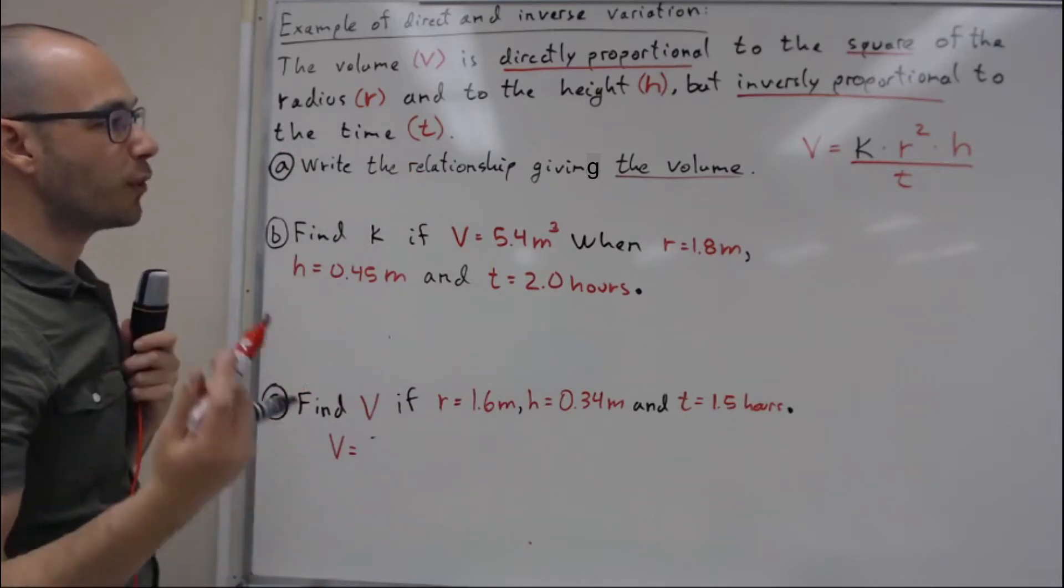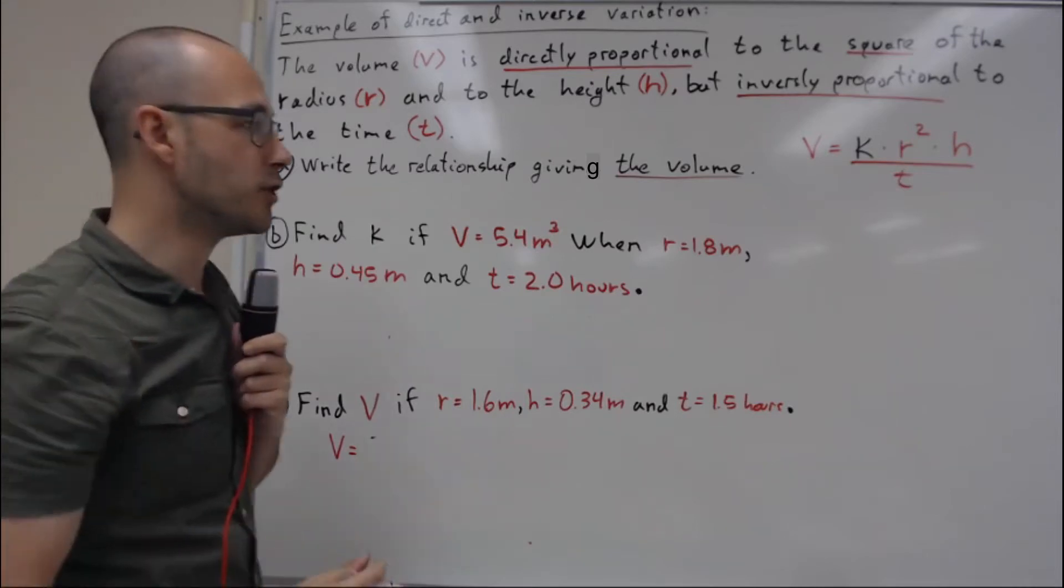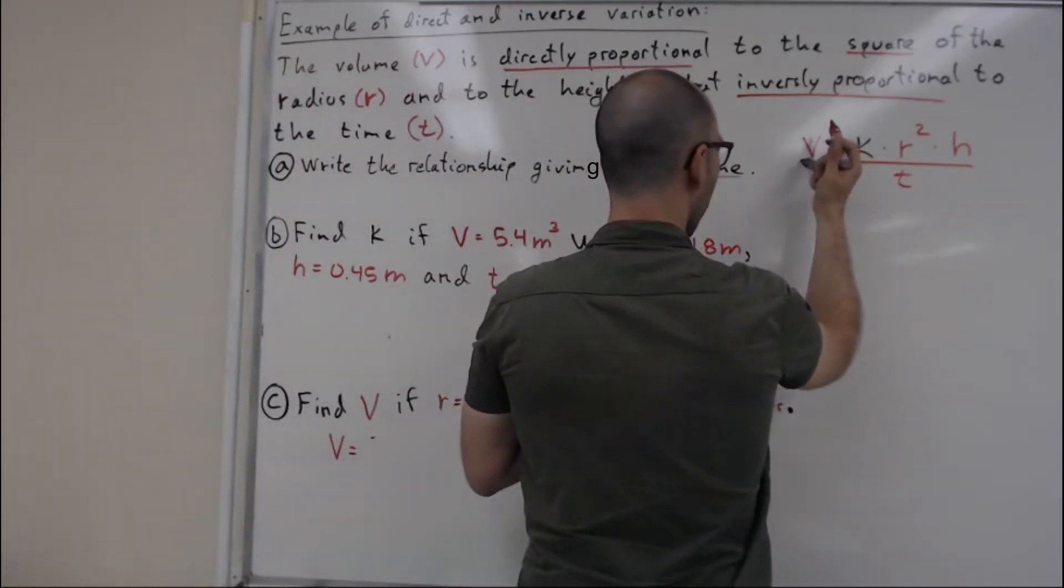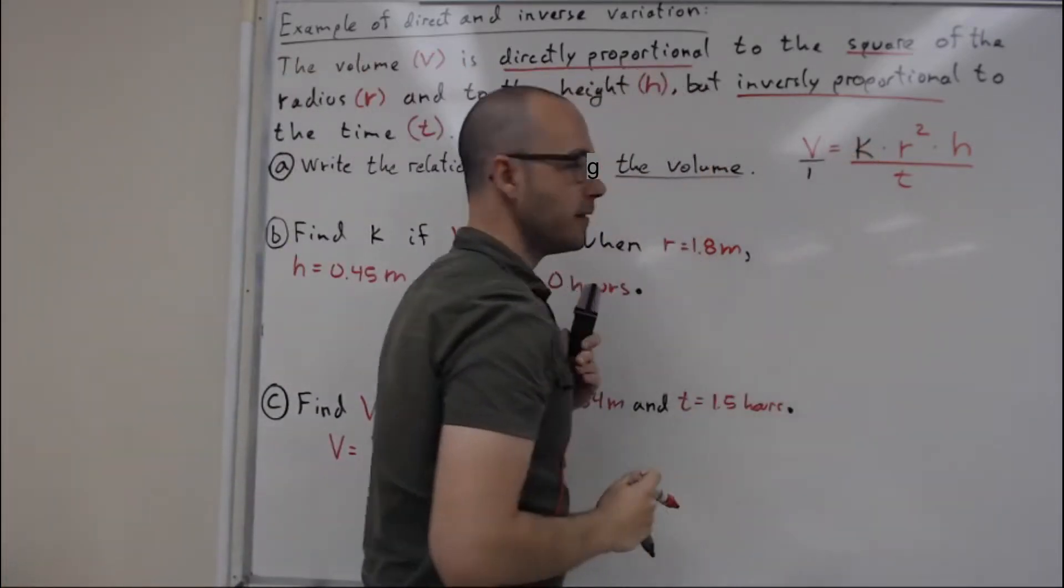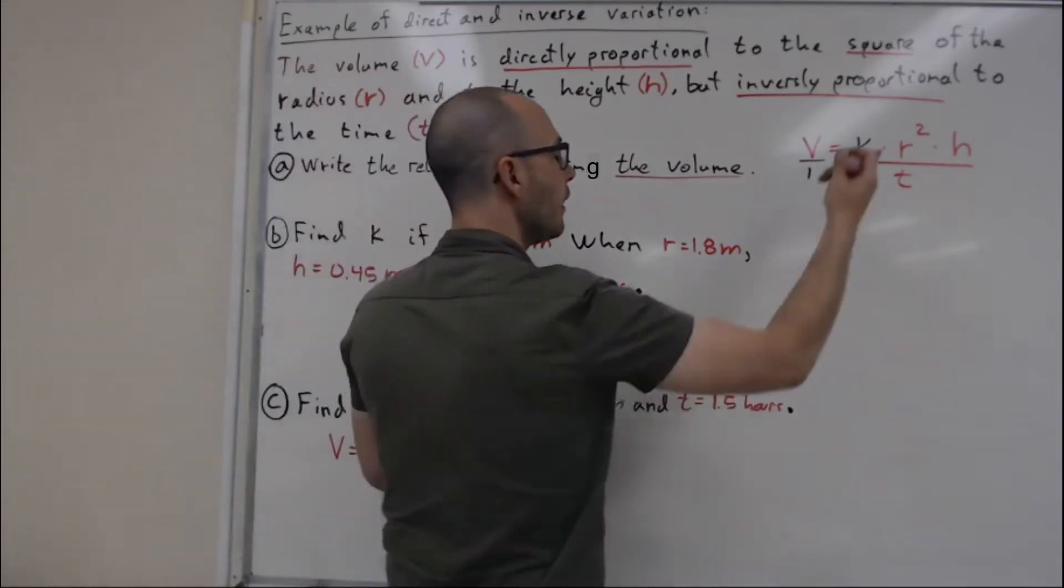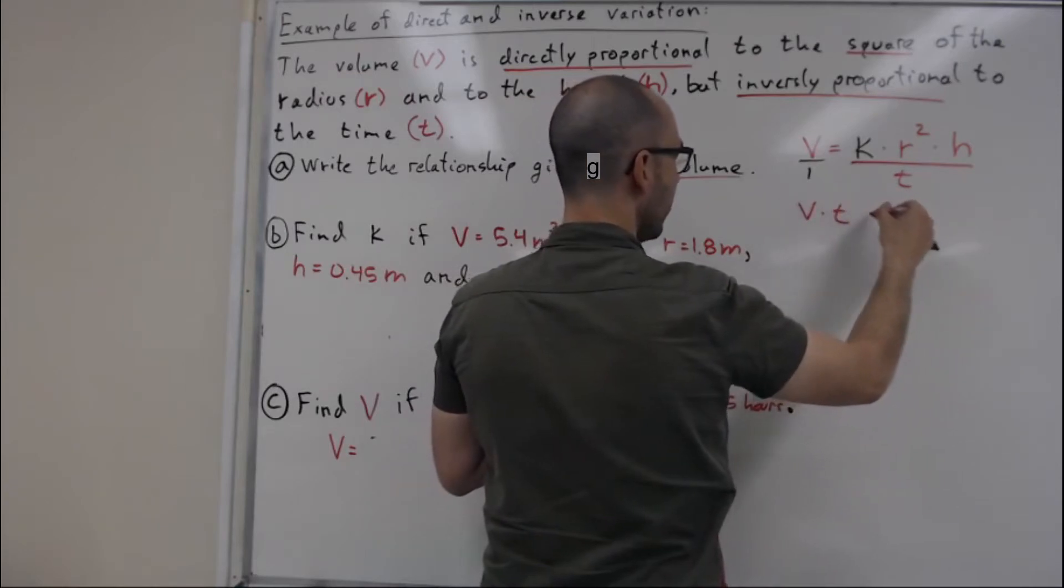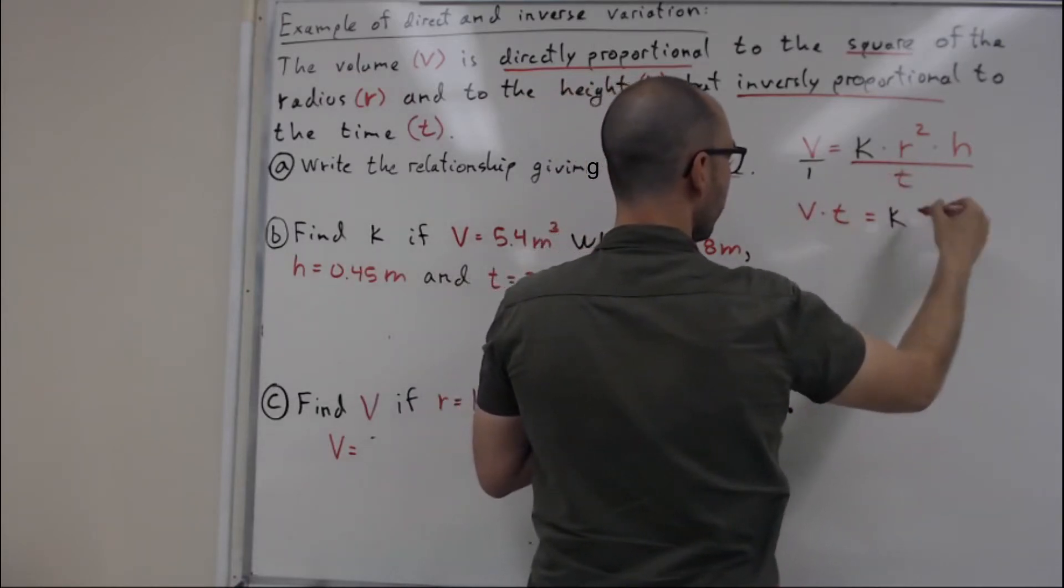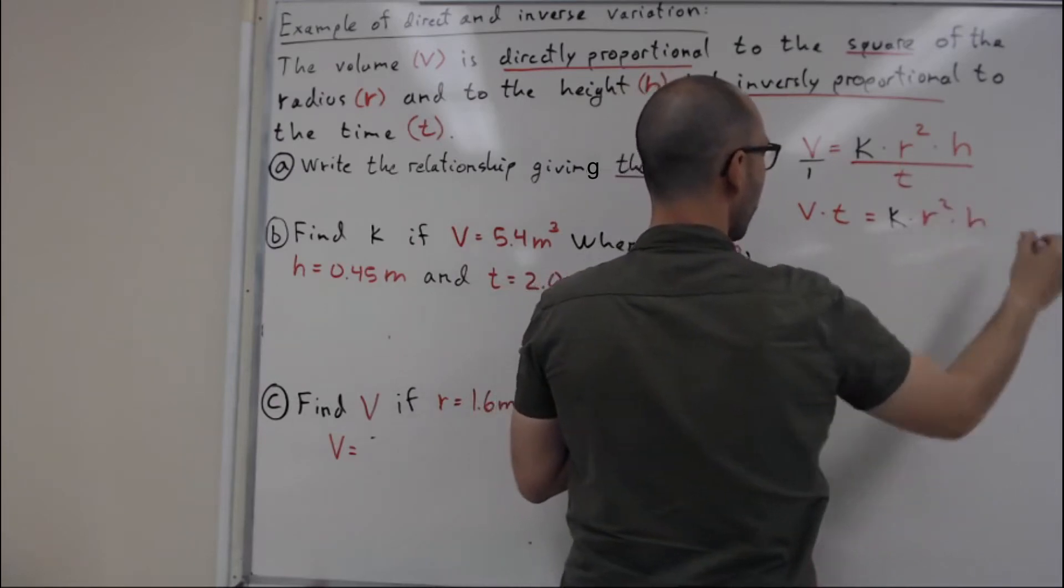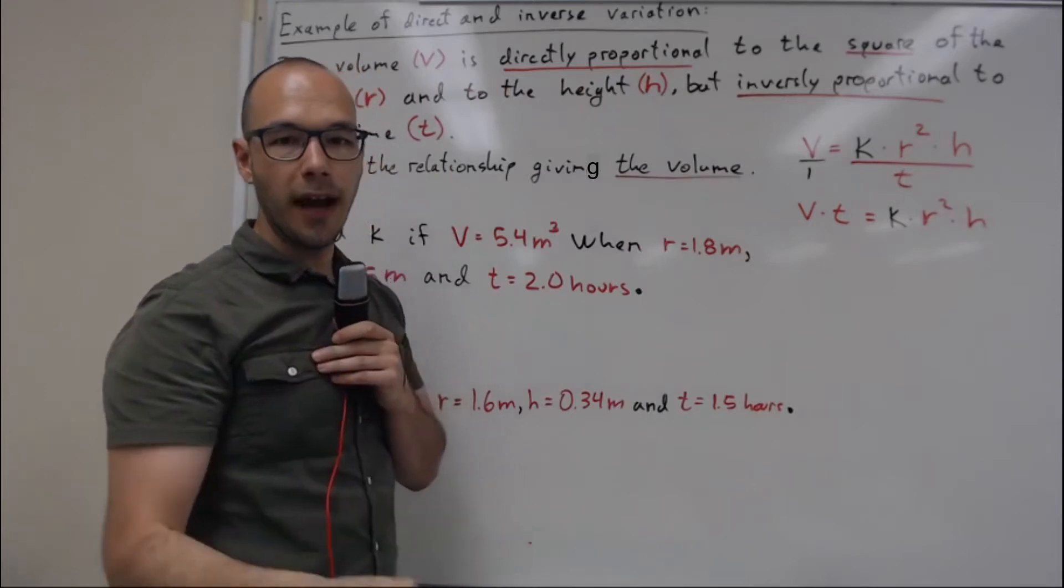We have to first isolate k in that original equation. I can do that by dividing my V by one, which does not change the equation, and I can cross multiply. So I'll have V multiplied by t is equal to k multiplied by r squared multiplied by h.